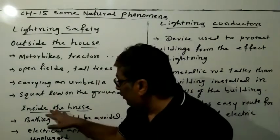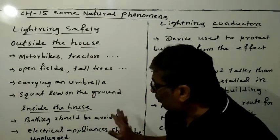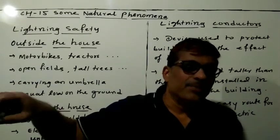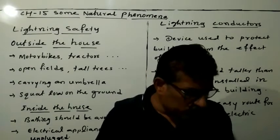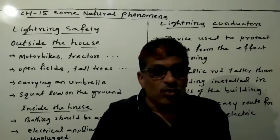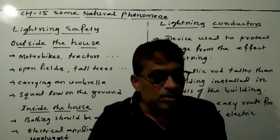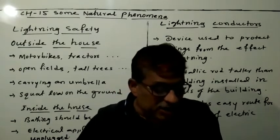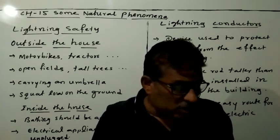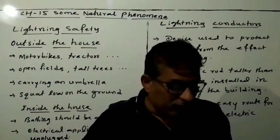Inside the house, bathing should be avoided during thunderstorms because metallic taps are made of metal and there is a chance of getting a shock. Lightning can strike telephone cords, electrical wires, or metal pipes. Since lightning is an electrical discharge, contact with these should be avoided during the thunderstorm.